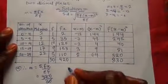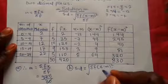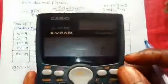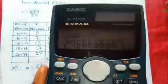Now that we've completed the table, we can solve for the standard deviation. Writing out the formula: SD equals the square root of summation F(X minus M)² divided by summation F. Substituting our values: 830 divided by 30. Using a calculator, 830 divided by 30 gives us 27.6666 recurring.